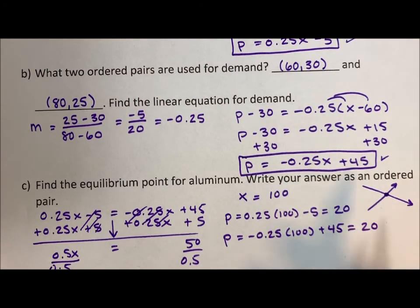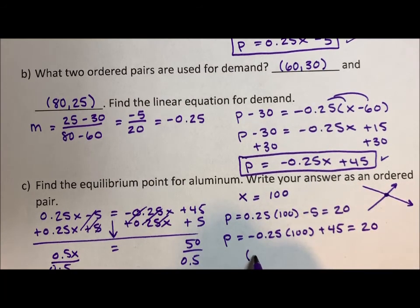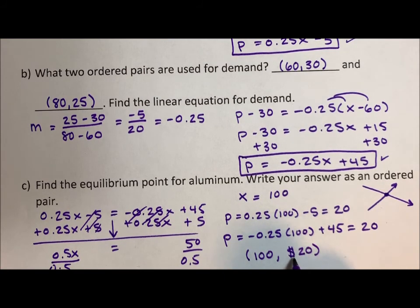It says to write my answer as an ordered pair. So the quantity is 100. And the price point is $20. And I'm going to make sure I put that dollar sign in so that I have my answer labeled. All right. I hope you've enjoyed this video. Please subscribe to my YouTube channel, like my Facebook page, and I'll see you on the next video. Thanks.